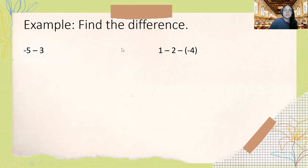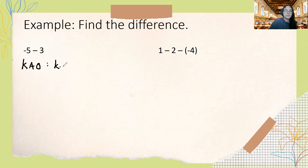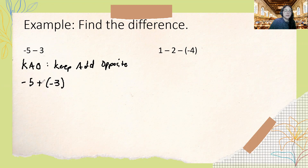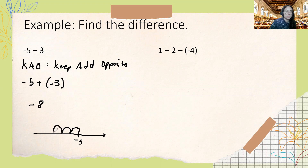For negative 5 minus 3, using keep, add, opposite: we keep negative 5 the same, add instead of subtract, and add the opposite of positive 3, which is negative 3. So negative 5 plus negative 3 gives us negative 8. On the number line, we start at negative 5 and move 3 spaces to the left — 1, 2, 3 — landing at negative 8.